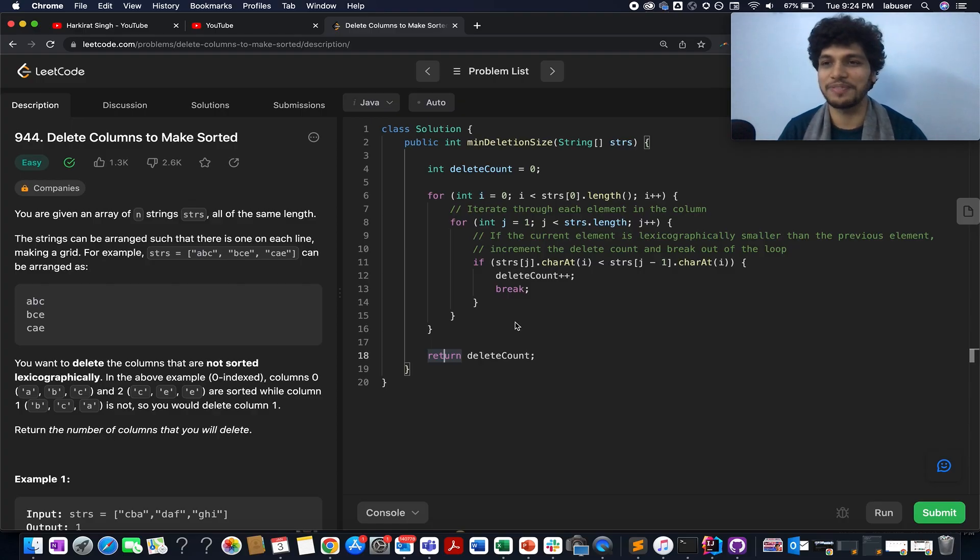Here I present the third of January LeetCode challenge. The problem that we have today is delete columns to make them sorted. This question is an easy level question based on the concept of strings, and I know most of my subscribers would be able to solve this question by themselves. For those who are new, this solution is for them.